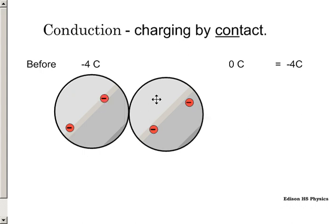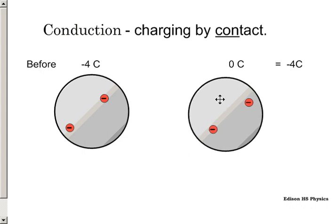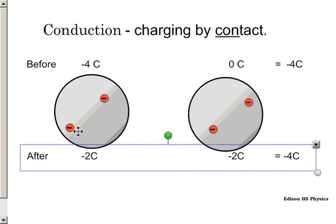Once we move the two spheres apart, these electrons want to stay in this one because all of a sudden they have more real estate to spread out in. Afterwards, we're going to get a total charge of negative two coulombs in the left one, negative two in the right one, for a total of negative four altogether. Conservation of charge says that before and after we should have the same charge. Before it was negative four plus zero is negative four. Afterwards, it's negative two minus two is four.